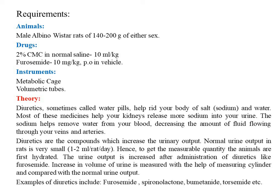We can correlate the urinary output between the control group and test group animals. Starting from the theory: diuretics are also known as water pills because they help to rid your body of salt and water. The normal urinary output in rats is very small — approximately 1 to 2 ml per day.